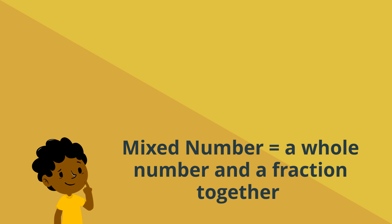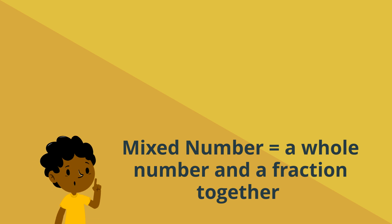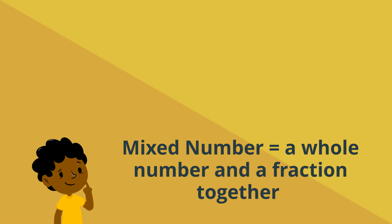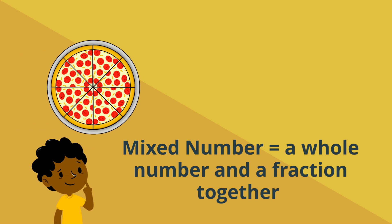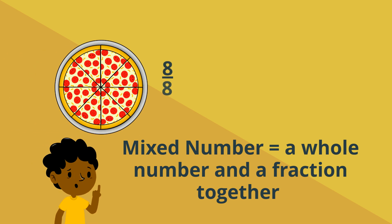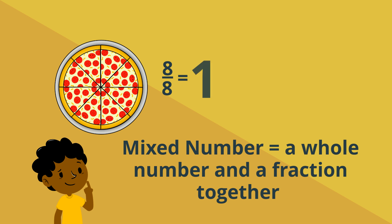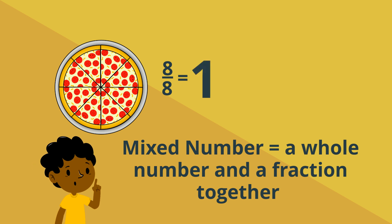To find a mixed number, you need to know how much 1 whole is. In this case, 8 eighths is 1 whole.